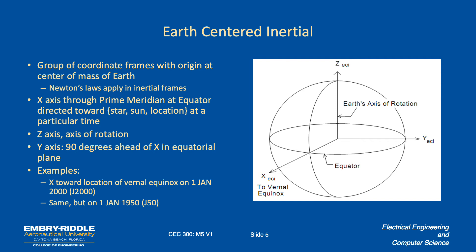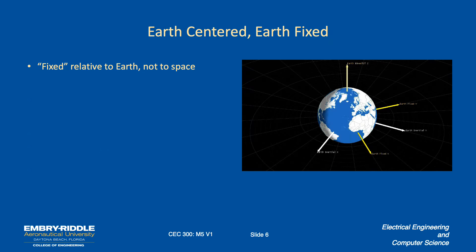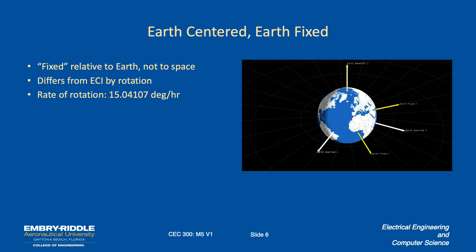There is an ECI frame called J2000, in which the x-direction points to where the vernal equinox would be in March, specifically on January 1st. You can similarly define frames for other dates, such as January 1950. The Earth-Centered Earth-Fixed reference frame is fixed relative to the earth but not to space — we know the earth is rotating relative to the inertial frame. The only way it differs from the ECI frame is by that rotation. It rotates about 15 degrees per hour, which gives us the 24-hour day.